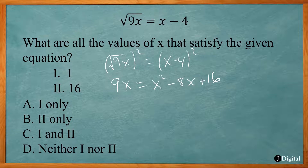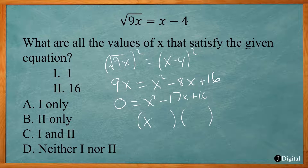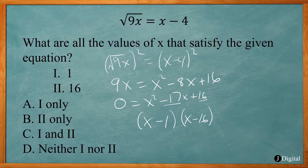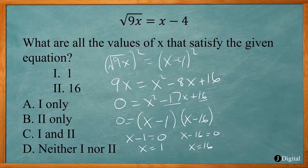Now I have the third root of x to the fourth. I can rewrite that as a fraction in the exponent, where x will be 4 on top and the root — 3 — on the bottom. So it's going to be 3x to the 4/3 power. That's answer choice B.